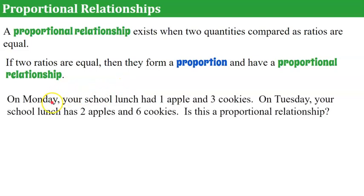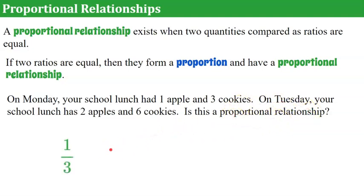So let's look at a real-world problem. On Monday, your school lunch had one apple and three cookies. On Tuesday, your school lunch has two apples and six cookies. And we're asked: is this a proportional relationship? So how we would determine that is we'd make the ratios. On Monday, our ratio is one apple to three cookies. On Tuesday, our ratio is two apples to six cookies.